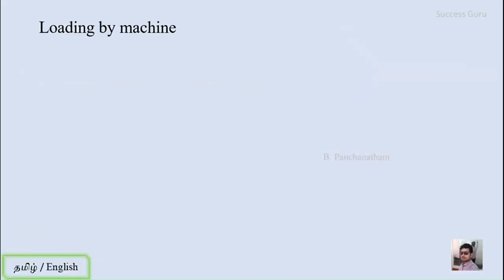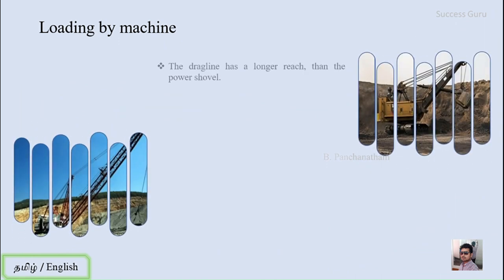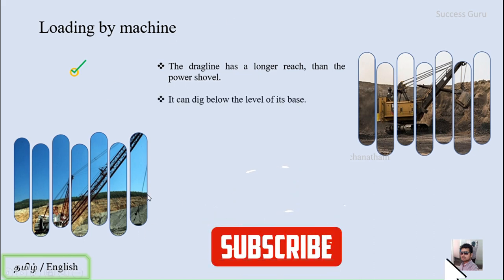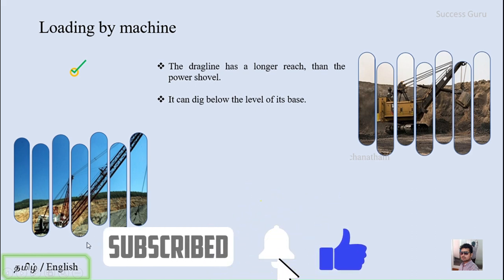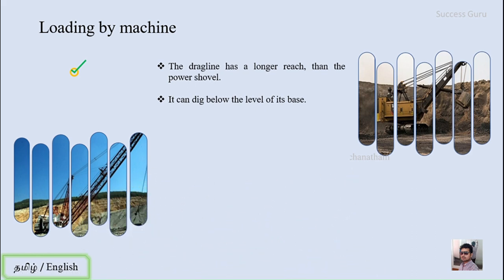Now let us see the comparison between the power shovel and the drag line. First, the drag line has a longer reach than the power shovel — in the power shovel you have to be near the working space, whereas the drag line can reach a longer distance. Second, the drag line can dig below the level of its base, so if it is on a wheelbase at a certain height you can dig below that level. The power shovel can only work above its fixture height.